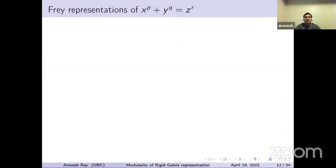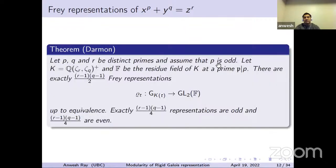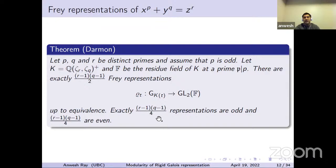Finally, we have Frey representations when P, Q, and R are actually distinct primes with P odd. Now K is going to be the totally real subfield of Q(zeta_R · zeta_Q), and F is going to be the residue field of K at a prime above P. In this situation, there are (R−1)(Q−1)/2 Frey representations up to equivalence, with half being odd and half being even.